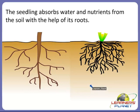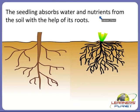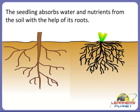Soil contains all the vital nutrients and water. That is why we always pour water to the plants at the bottom surface, not on the upper surface. The soil takes the water inside it, and after that the seedling absorbs water and nutrients from the soil with the help of roots. Roots are a very important part of the plant, as they play a very important role in the growing of a plant.